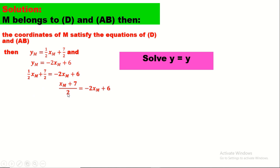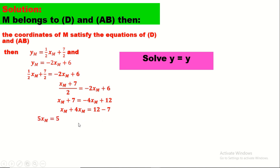Grouping unknowns on one side: xM + 4xM = 12 - 7, so 5xM = 5, giving xM = 1. For yM, using the equation of AB: yM = -2(1) + 6 = 4. Therefore the coordinates of M are (1, 4).